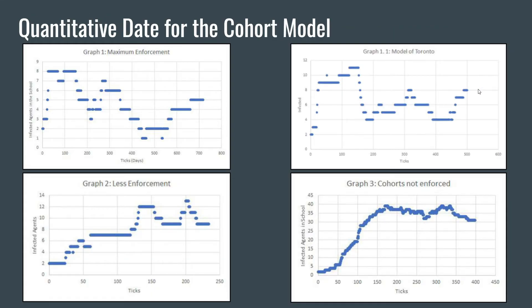The quantitative data that we retrieve from this model lines up with the literature. In the model with the most enforcement of our cohort policy, although there is some periodicity associated with the rise and fall of the infection rate, overall it is a downward trend, and we can see that the curve is flattening and cases are getting lower as time progresses.